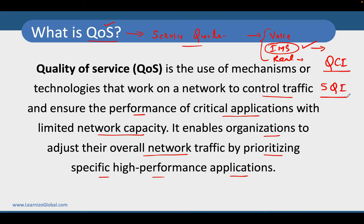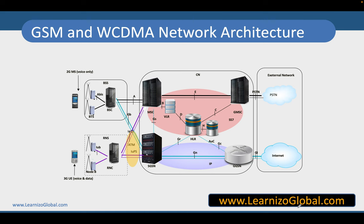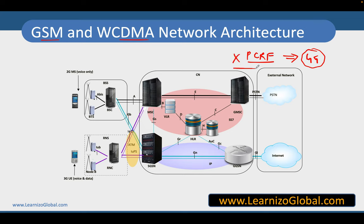Now let us understand QoS and how we were managing it before PCRF. Looking at the 2G and 3G network architecture, you do not see PCRF there. There is a misconception that PCRF was introduced in 4G, which is not true. PCRF was introduced with 3G networks, but many operators did not implement it. Let us understand how quality of service was managed when PCRF was not present in 2G and 3G networks.